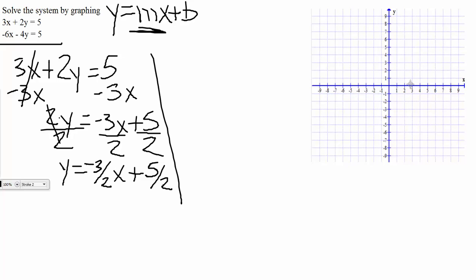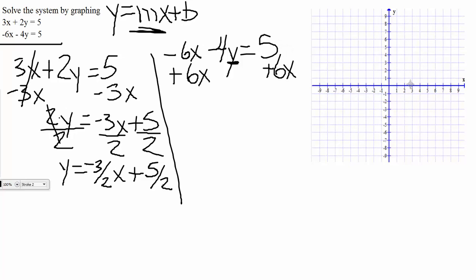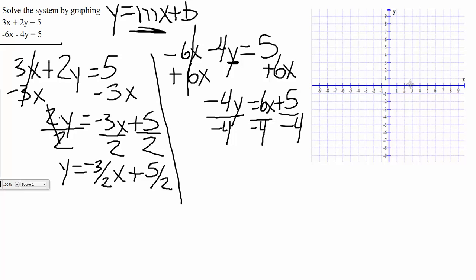Now let's get our second equation in the proper form. We have negative 6x minus 4y is equal to 5. Doing the same thing, we're solving for y, so we need to get the x over. Since we have a negative 6x, we're going to add 6x to both sides. It'll cancel on the left, so we drop down the minus 4y is equal to 6x plus 5. The last step would be to divide out the coefficient, so here our coefficient is negative 4, and we divide everything by negative 4.